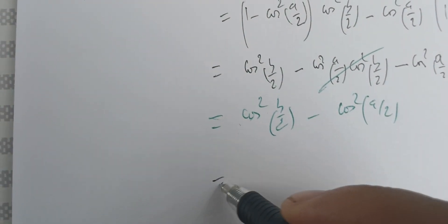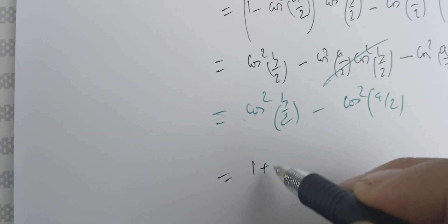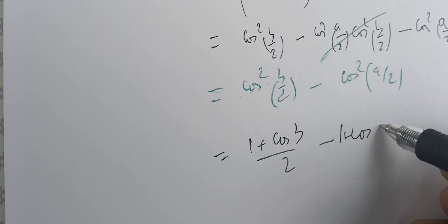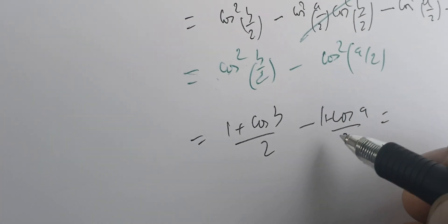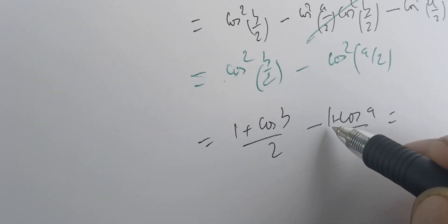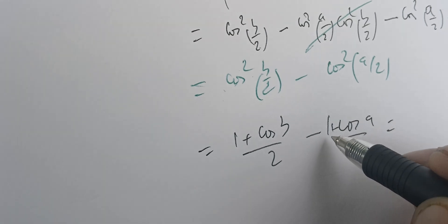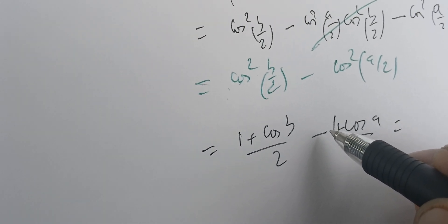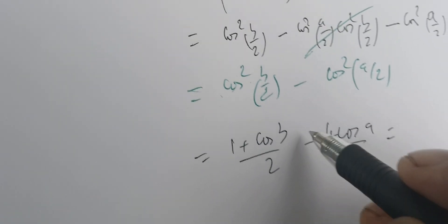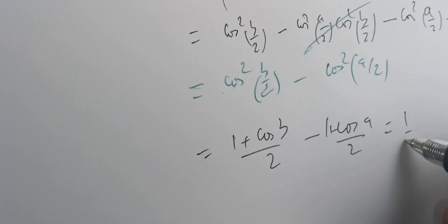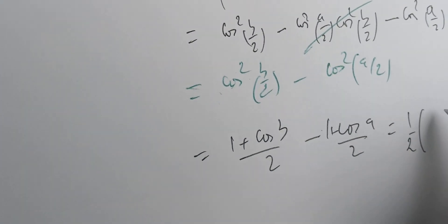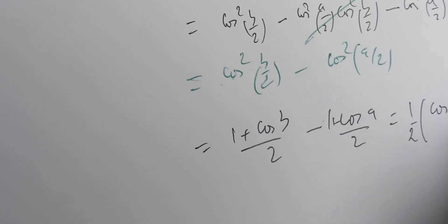Substituting, we get (1 + cos(b))/2 minus (1 + cos(a))/2. Taking the factor of 1/2 outside, the ones cancel, and we're left with (1/2)(cos(b) - cos(a)).